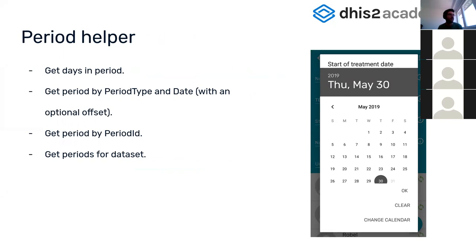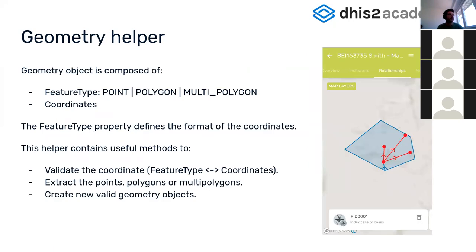The period helper includes handy methods such as getting the days in a period — for example, whether a month has 30, 31, or 28 days — getting a period or period ID based on a period type and a date to generate the unique identifier with the expected syntax, and getting all the periods available for a data set taking future periods into account.